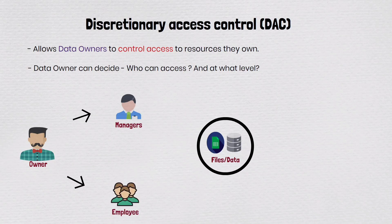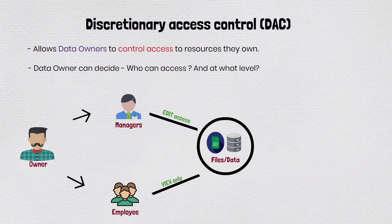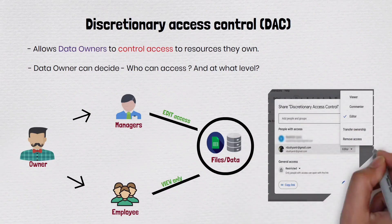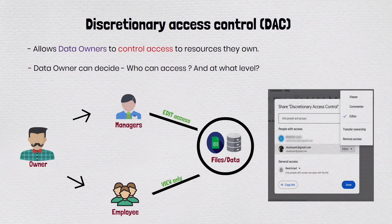For example, if you have a file on your computer, you can set permissions to allow specific users to read, write, or execute the file. When you share a Google Sheet or Excel with others, you have the discretion to control who can access the document and what level of access they have. You can set permissions such as view only, comment, edit access, or as an owner.